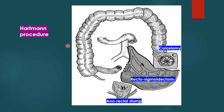This is a diagrammatic view of Hartmann's procedure. The rectosigmoid colon has been removed. The anorectal stump is sutured and left behind, and the end of the descending colon is brought out as a colostomy.